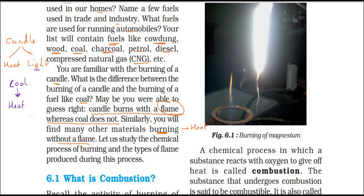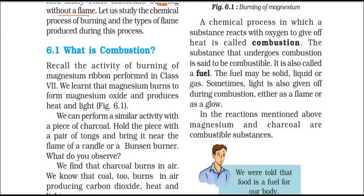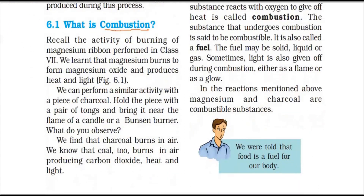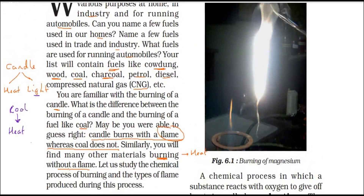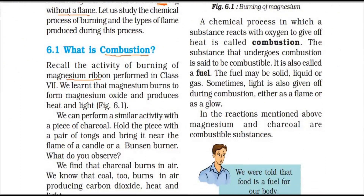Let us now study the chemical process of burning and the types of flame produced during this process. Let us first define combustion. In class 7, we did an activity of burning a magnesium ribbon. When you burn a magnesium ribbon — you take the ribbon and give it a little bit of heat — it will start burning, and you can see a bright flame or bright light. We learnt that magnesium burns to form magnesium oxide, and it produces heat and light.